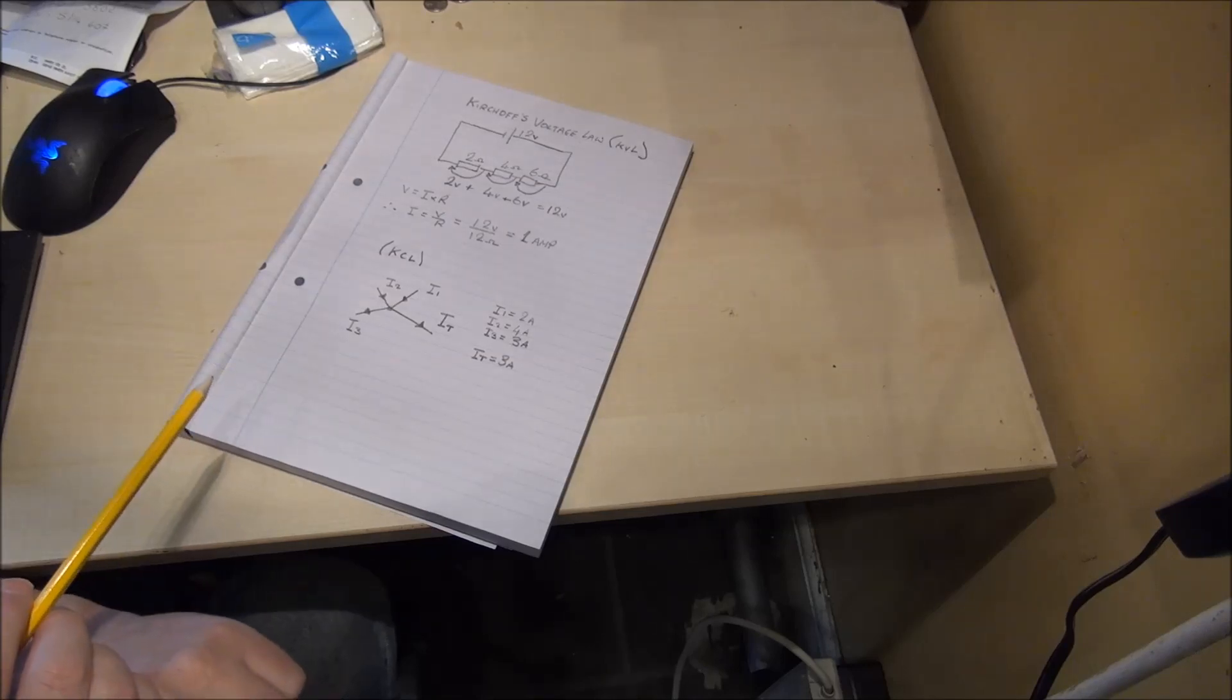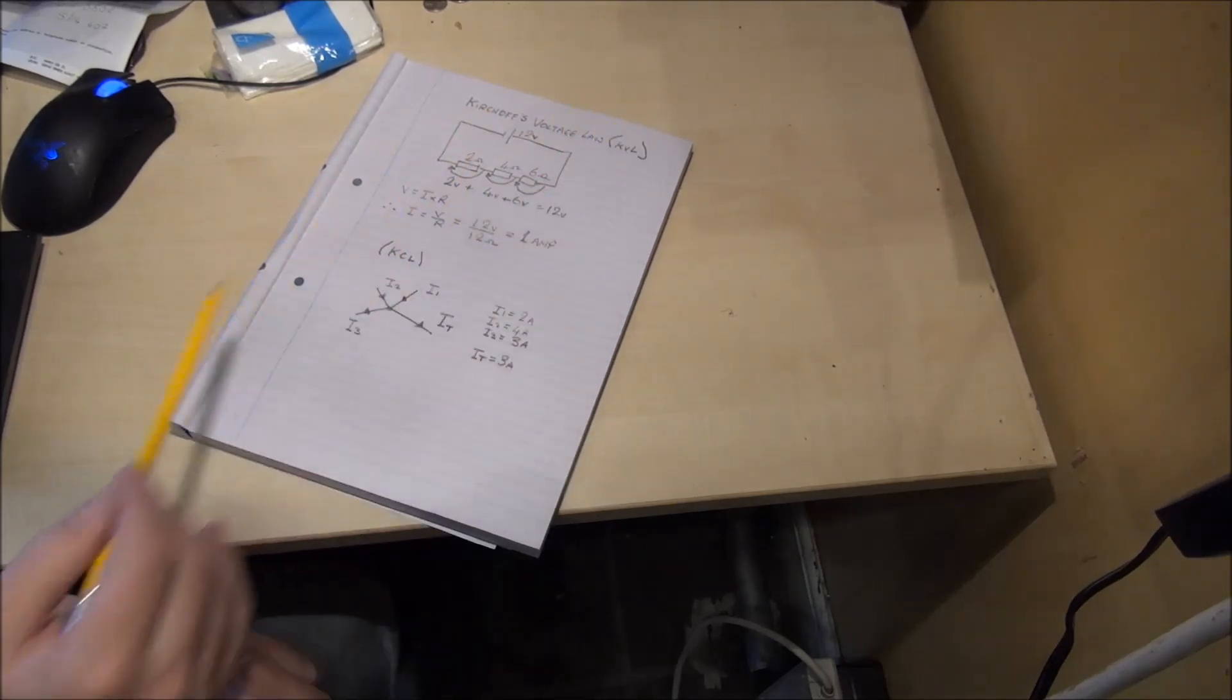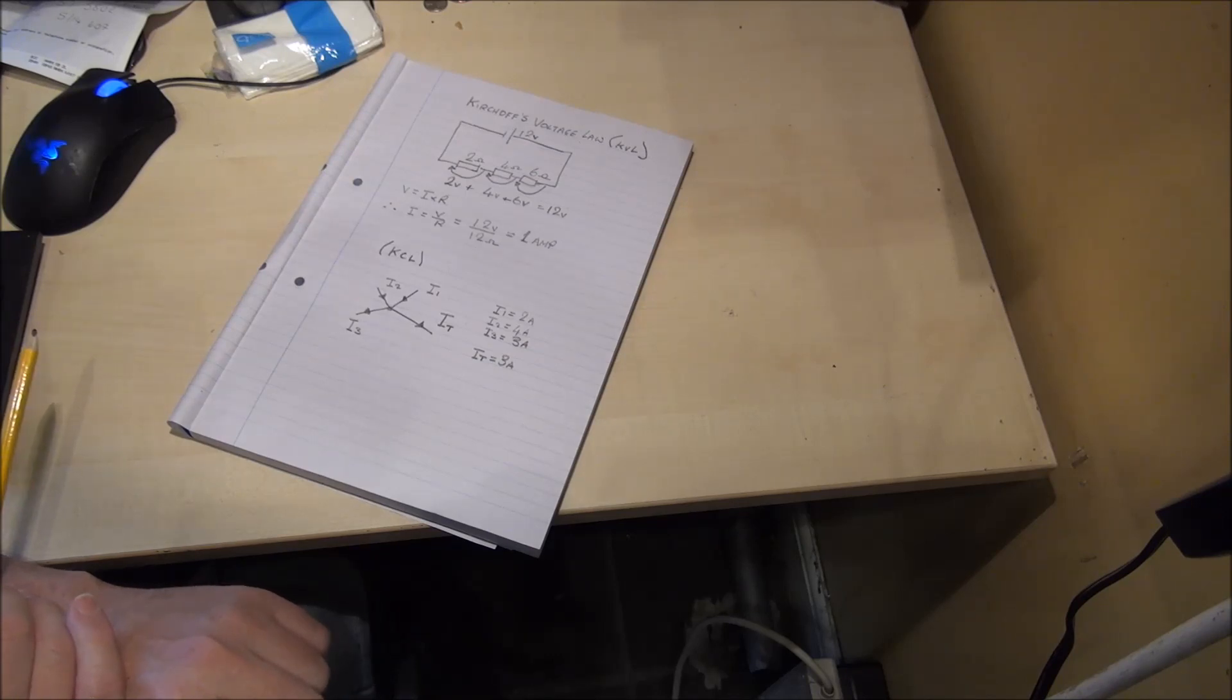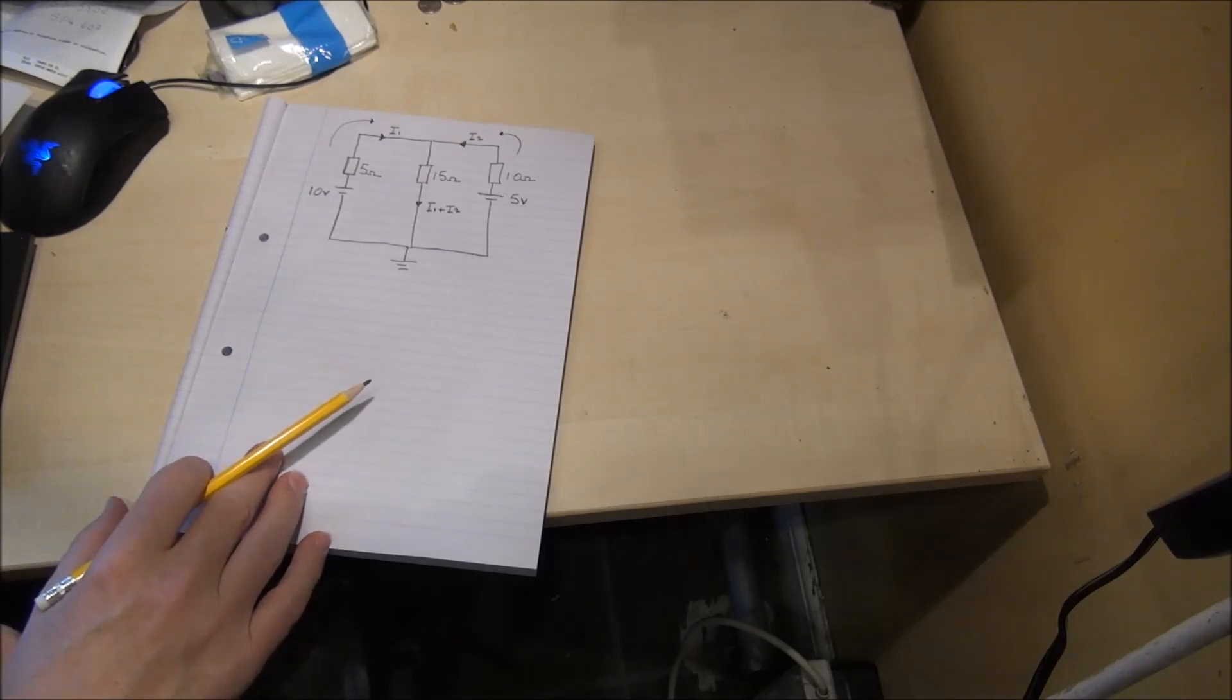The two laws together, KVL and KCL, can be used to calculate the voltage, current and power in a circuit that contains multiple voltage sources. We're going to look today at a circuit that contains 2 voltage sources. Here is the circuit we're going to be working on,